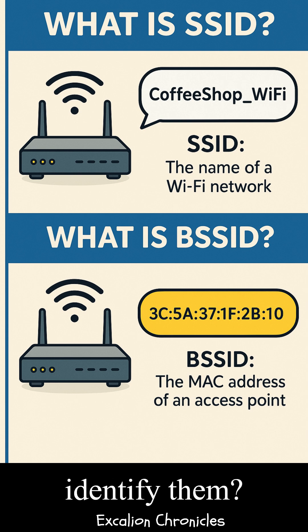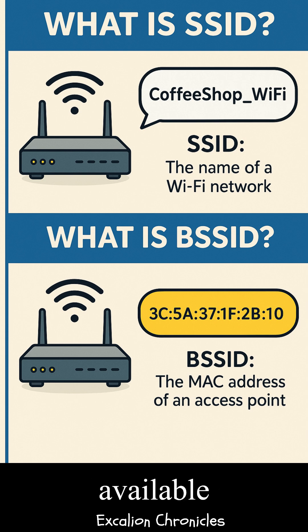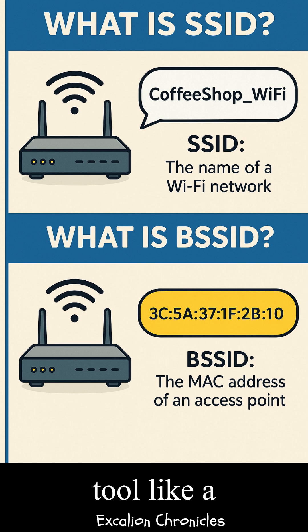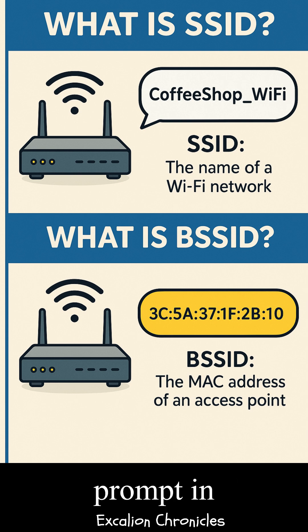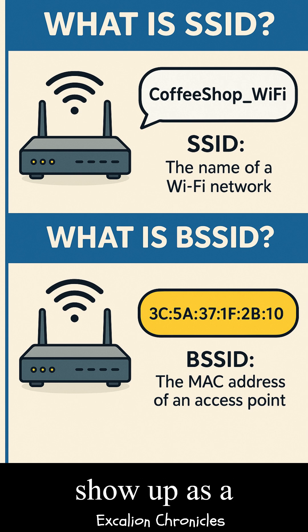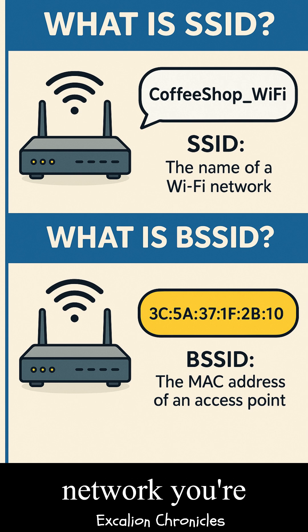How to identify them? To see the SSID, just look at the available networks in your device's Wi-Fi settings. To find the BSSID, you usually need a tool like a Wi-Fi analyzer app, or on your computer, the command prompt in Windows — use 'netsh wlan show interfaces.' The BSSID will show up as a MAC address associated with the network you're connected to.